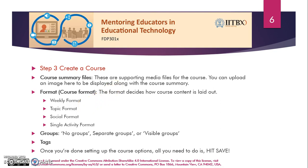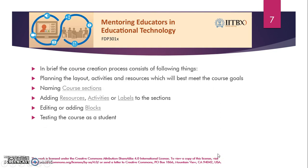Format: there are four formats present in Moodle — weekly format, topic format, social format, and single activity format. Most of the time, either weekly format or topic format is selected for creating a course. Then groups: no groups, separate groups, or visible groups — there are three types of groups. Then tags: in tags we can provide keywords through which it will be easier to find our course. Once you are done with the course options settings, all you need to do is hit the save button so that your created course is saved.